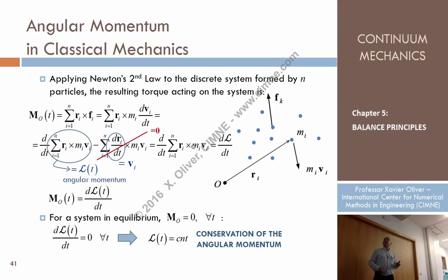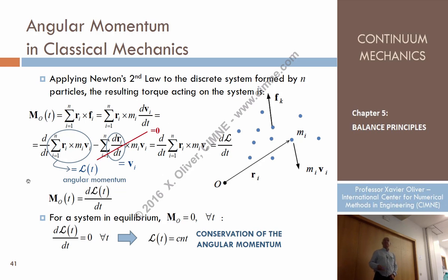So the angular momentum is the mass times the velocity — which is the momentum — multiplied by the position vector R in a vector product. That's what we call the angular momentum.